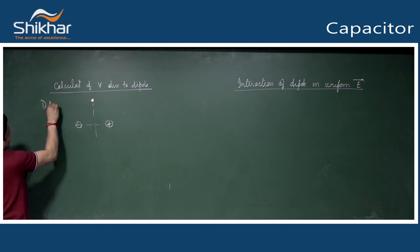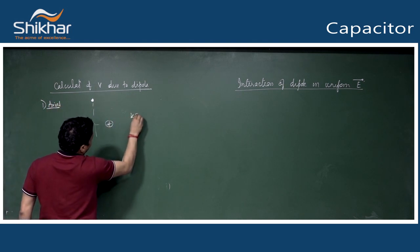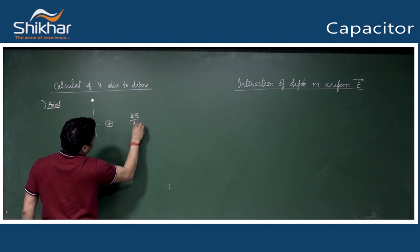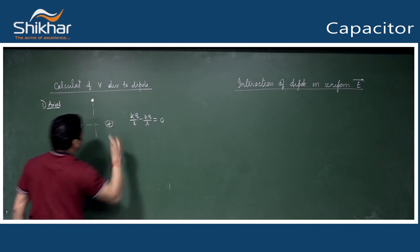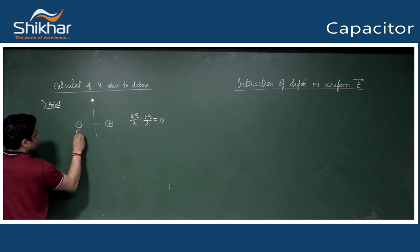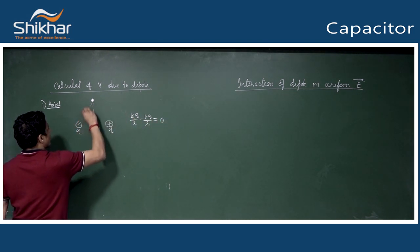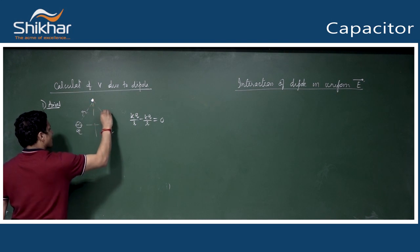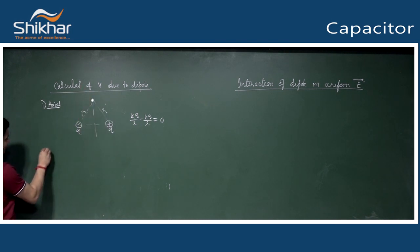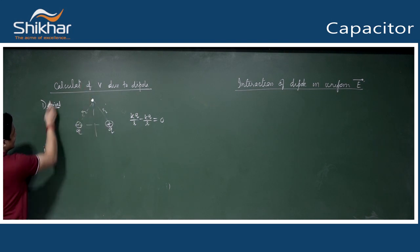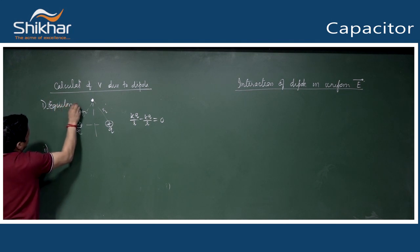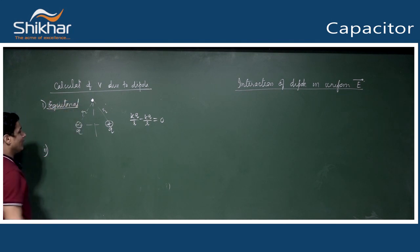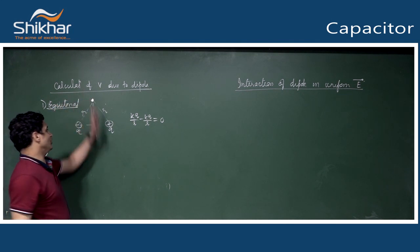On axial position, potential is zero because kq/r minus kq/r equals zero. So on the entire axial plane, the answer is zero.